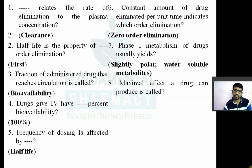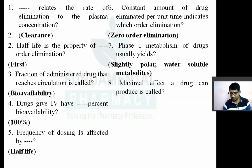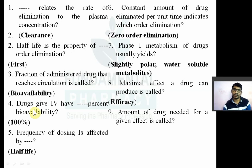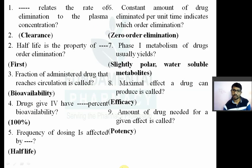Question number eight: the maximal effect a drug can produce is called efficacy. Efficacy means the maximum effect produced by a drug. Question number nine: the amount of drug needed to produce a given effect is called potency. The amount of drug needed to produce a particular effect is known as potency. If less amount of drug is required to produce a particular effect, that drug is more potent.